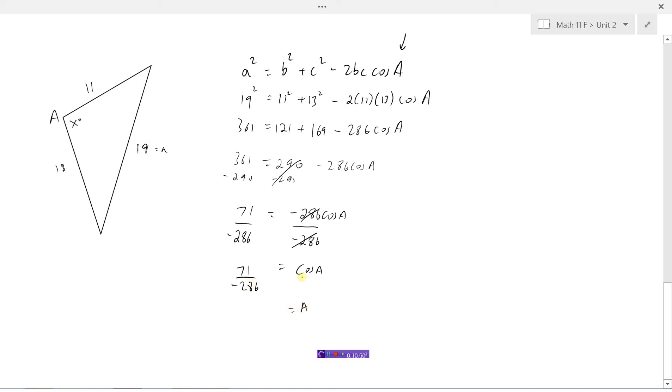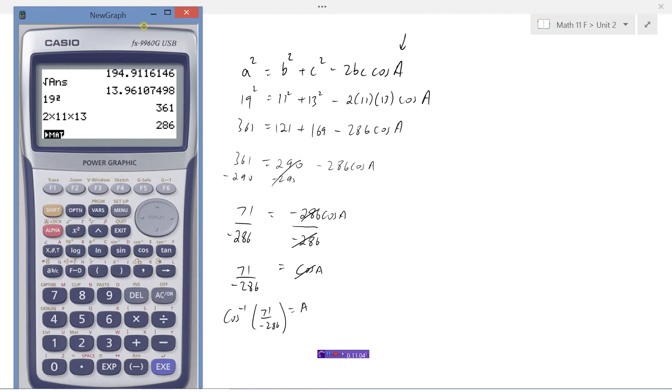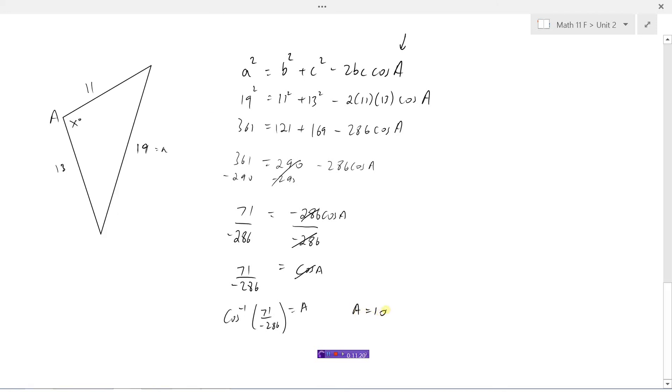So to isolate a, we will get rid of the cosine by taking the inverse cosine of both sides. So I need to take the inverse cosine of 71 divided by negative 286. And I get 104 degrees, which is our obtuse angle here. So same thing. Cosine law, when we're using it to find angles, no problem. It's going to give us the exact angle that we're looking for.